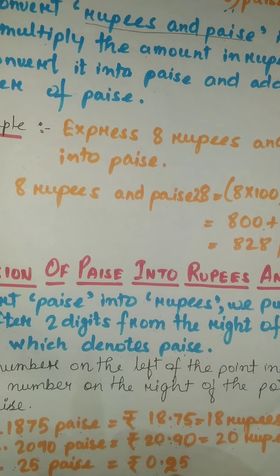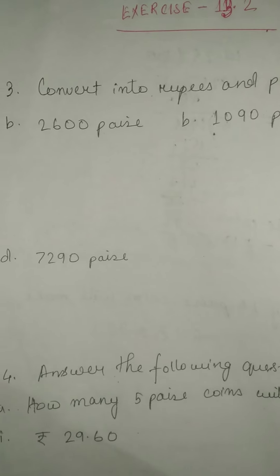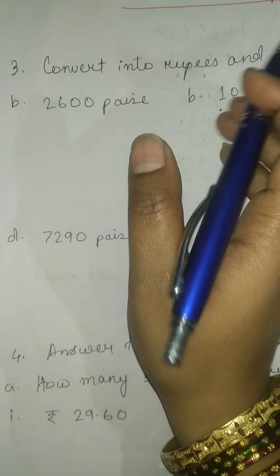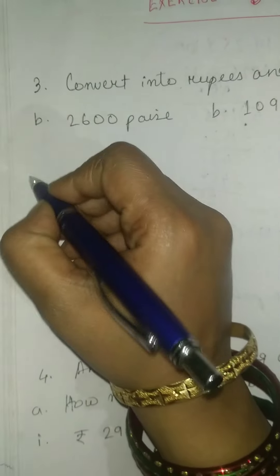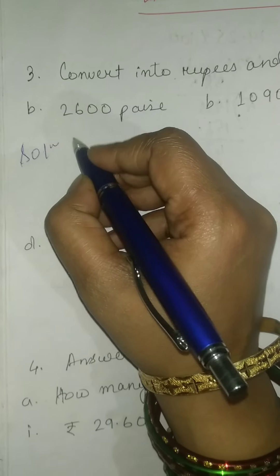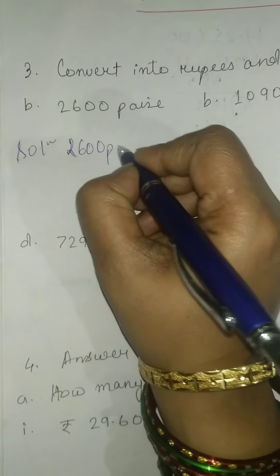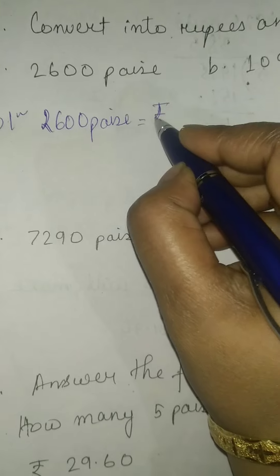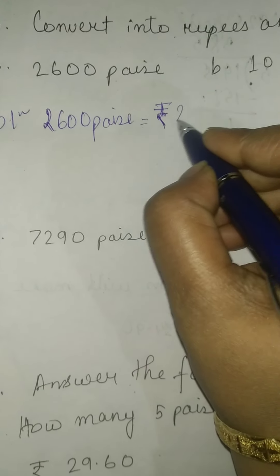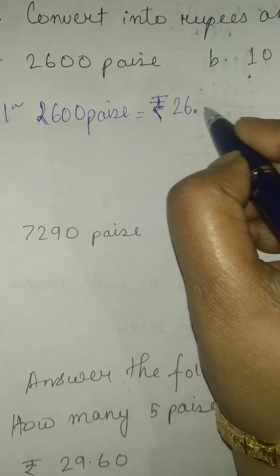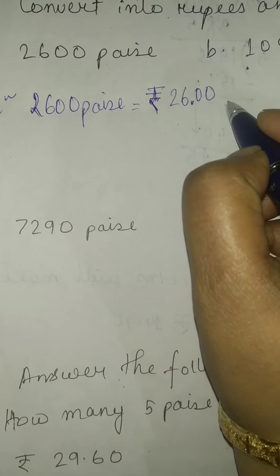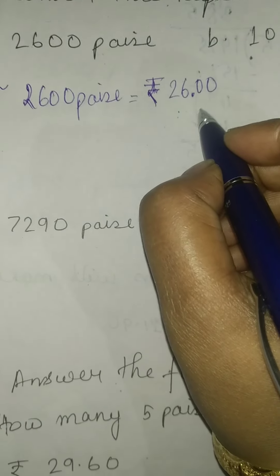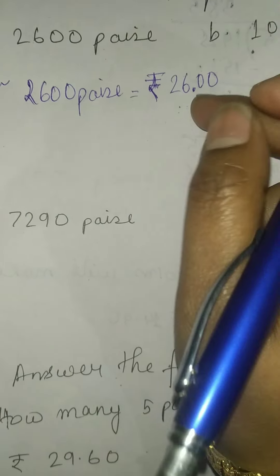Now let us start question number three. Part a is already solved in your book, so I am going to show you part b. The number is 2600 paise. We write the rupees symbol, then write 26, put a decimal point, and the remaining digits are written after the point, giving ₹26.00.